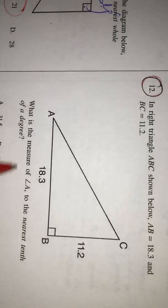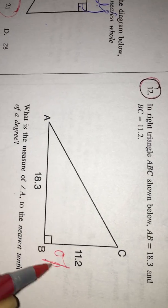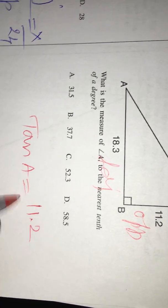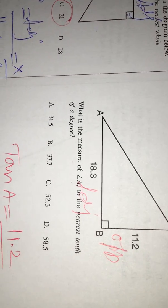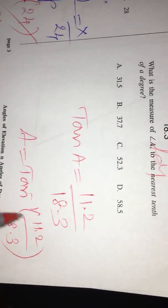And so, you can even do this 12th in the same way. Measure of angle A. That means this is opposite and this is adjacent. So they are connected by tan A equals 11.2 over 18.3. Therefore, A is tan inverse of 11.2 over 18.3.